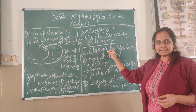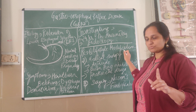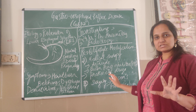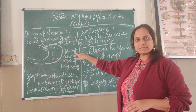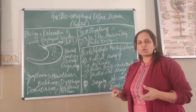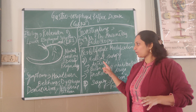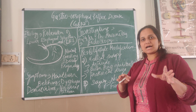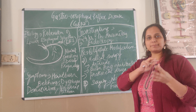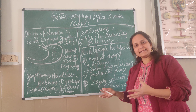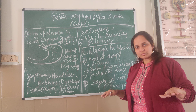Now we come to treatment. Treatment options are: first, lifestyle modification; second, medical therapy; and last, surgery as a last option. For lifestyle modification, we tell the patient to quit alcohol and quit smoking, and to lose weight. We advise taking frequent small meals — 4 to 6 times a day — but in smaller portions. After eating, the patient should not lie down for at least 2 hours.